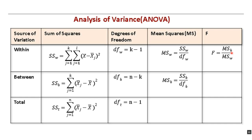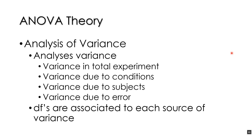Just to reiterate: analysis of variance means we're analyzing variance, and we divide up the variance in the experiment into different parts. We have the variance of the total experiment — the sum of squares total — the variance due to conditions, which is between; the variance due to subjects, which in a between-subjects design automatically goes into error; and the variance due to error — things that are not controlled, things varying randomly.